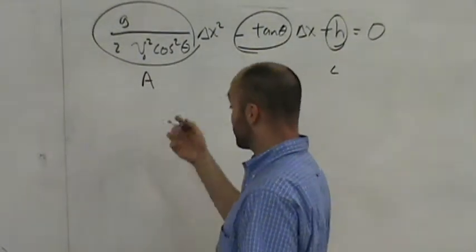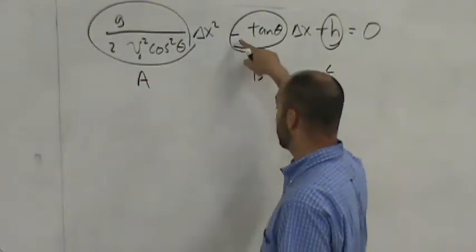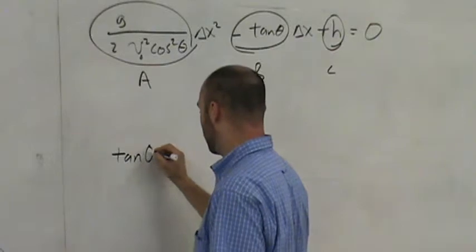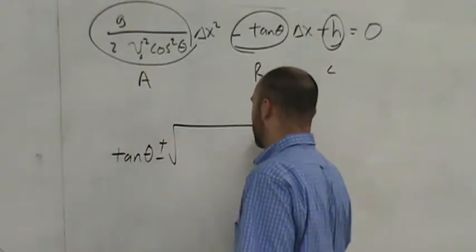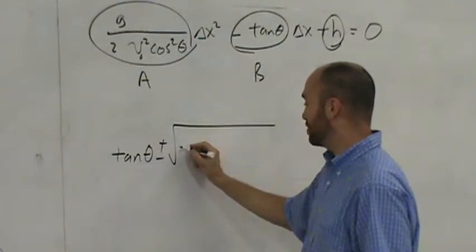This piece here, it goes negative b, plus or minus, so starting here, negative b. So this is already negative, so it becomes positive tangent theta, plus or minus, square root of b squared. Negative tangent squared becomes positive tangent squared.